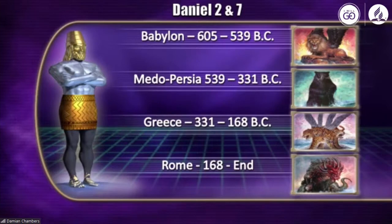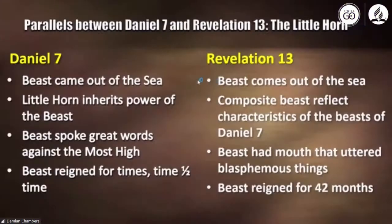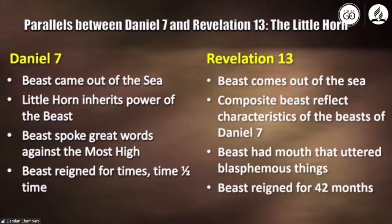When we get to Revelation 13, you'll find that this beast is pulling on the language of Daniel chapter 7. Please take your Bibles to Revelation chapter 13, verses 1 to 3, as well as Daniel chapter 7, verses 21 to 25. That will give you a summary of the little horn and the beast of Revelation 13. What we're saying is that both entities, both icons, represent the same power.